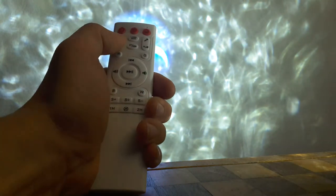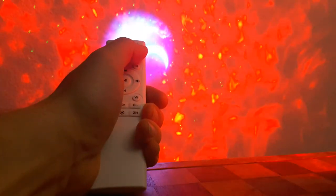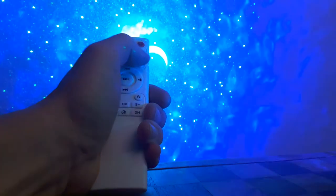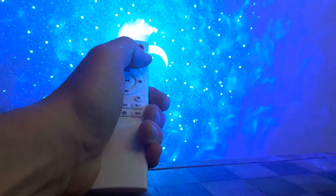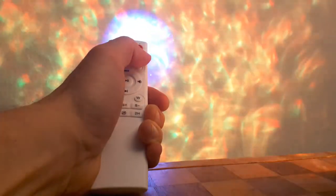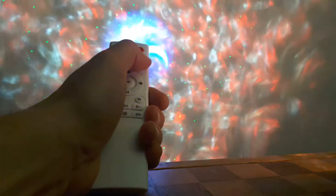So you have a sound mode. That'll be sound activated. And then you can change the brightness of the LEDs by clicking this brightness button here. You need the remote to adjust the brightness. It's not on the unit.